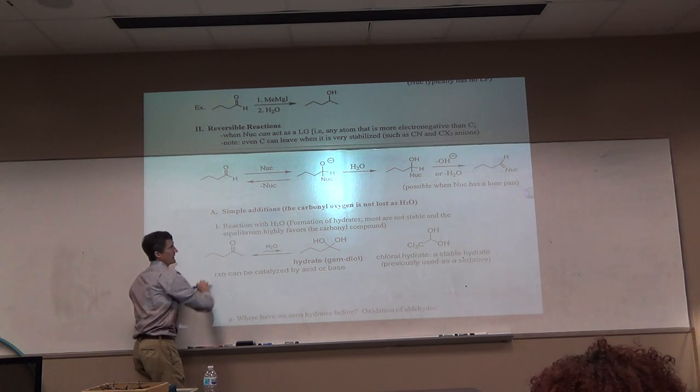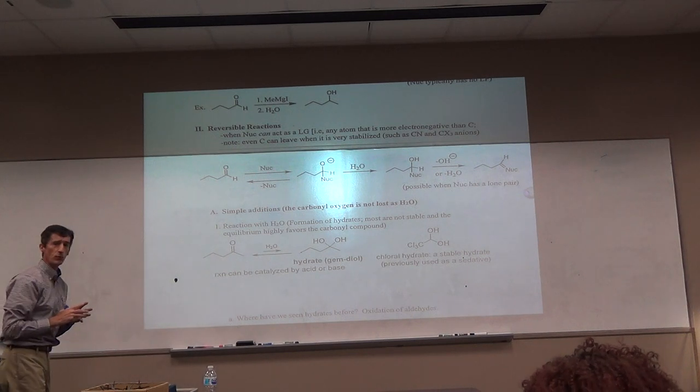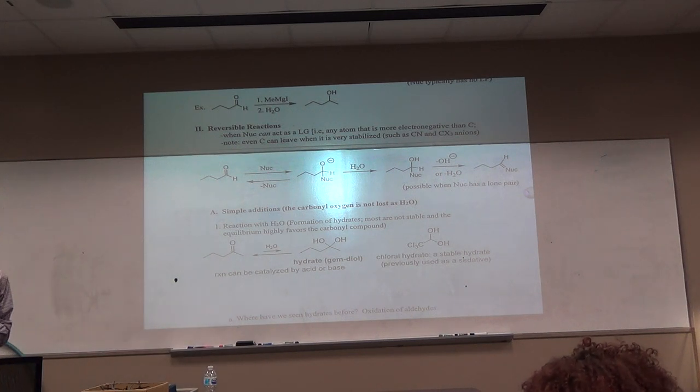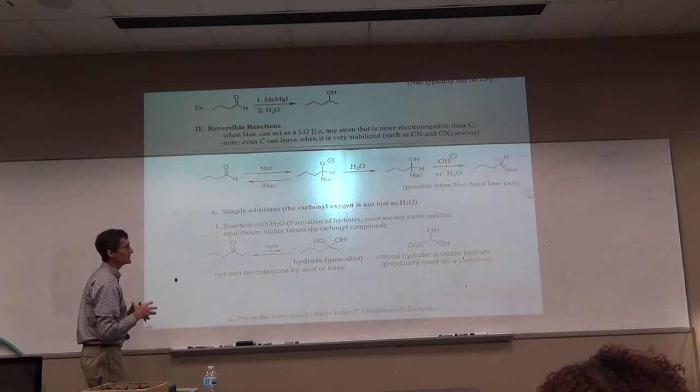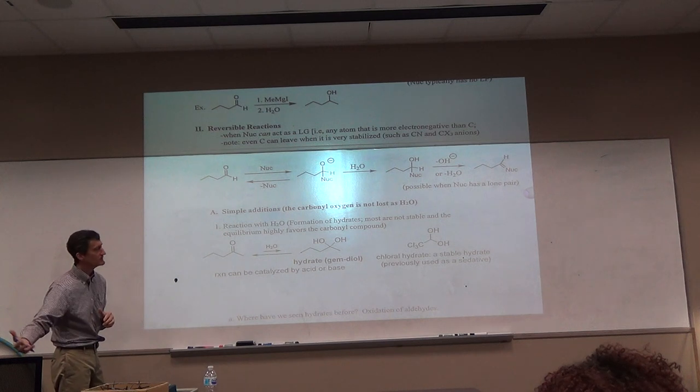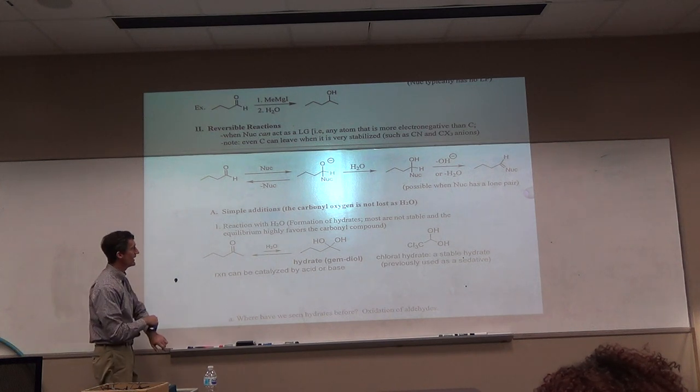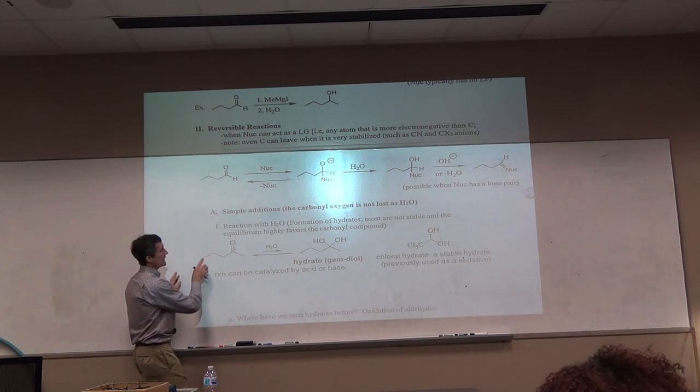When is this the case? Any atom that is more electronegative than carbon. Even carbon can leave when it's very stabilized, such as CN or CX3. Because a nucleophile can be a leaving group, that's why this is reversible. It could also leave at this point. An alternative is for the nucleophile, it had a lone pair. It has a lone pair for it to turn around and kick off the oxygen. This is another possible pathway. And you're going to end up with a double bond between nucleophile and carbon, and you lost the oxygen.